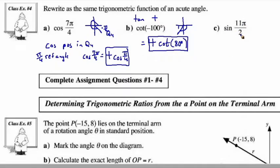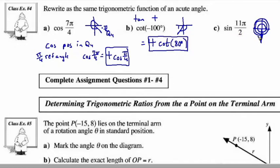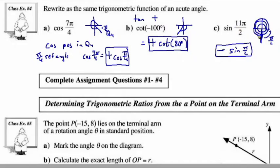For sine of 11π/2: counting by 2π/2 increments — 2π/2, 4π/2, 6π/2, 8π/2, 10π/2 — and then one extra π/2, landing right on the negative y-axis. The sine is going to be negative there, sharing the boundary of quadrants 3 and 4. Since it's on the y-axis, the reference angle can go either way — it's π/2. So sine is negative in both of those quadrants, and the answer uses the sine of the reference angle π/2.